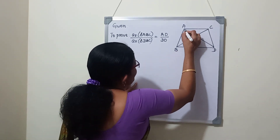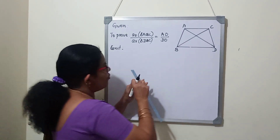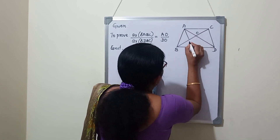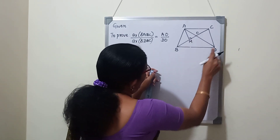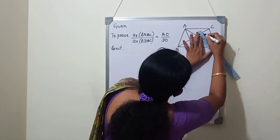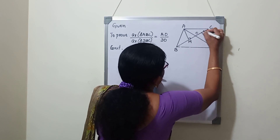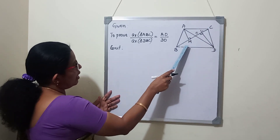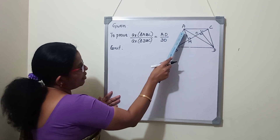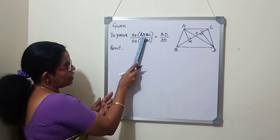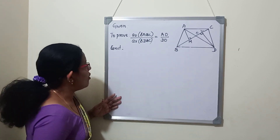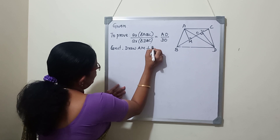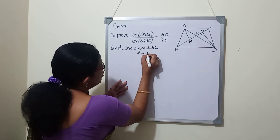Construction: draw AM perpendicular to BC for the first triangle ABC. And draw DL perpendicular to the same base BC for the second triangle DBC. So we constructed two perpendiculars AM and DL to the base BC. AO and DO are not the sides of triangles ABC or DBC, but we will prove the ratio equals AO by DO using this construction.